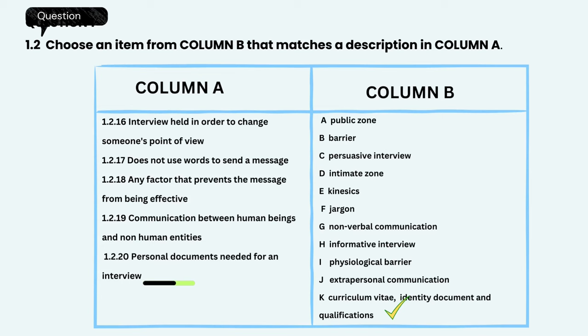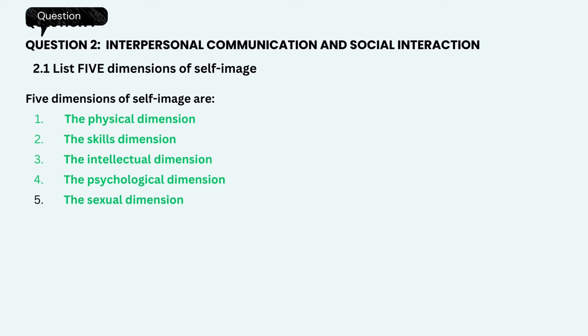List five dimensions of self-image. The five dimensions of self-image are: 1. The physical dimension. 2. The skills dimension. 3. The intellectual dimension. 4. The psychological dimension. And 5. The sexual dimension.